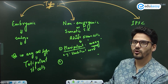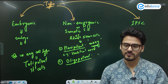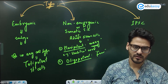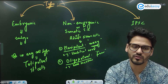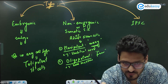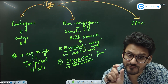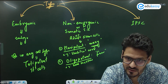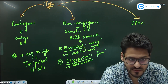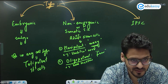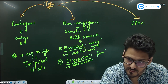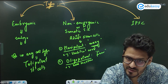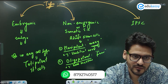In our body we also have oligopotent stem cells. 'Oligo' means few — these stem cells can create only a few cell types. For example, bone marrow has stem cells that can create a few types: RBC, WBC, B cells, T cells, helper T cells, killer T cells, lymphocytes — all blood cell types. But if you ask them to create a brain cell, they cannot. So oligopotent stem cells can create only a few cell types.